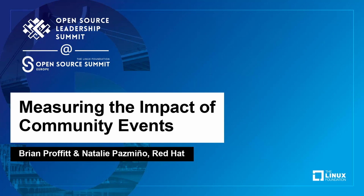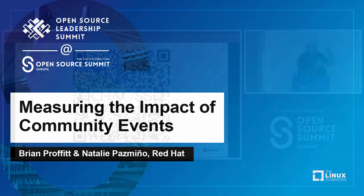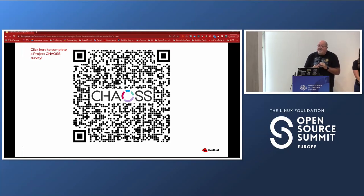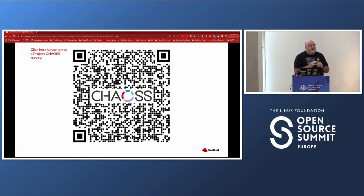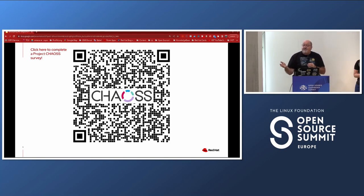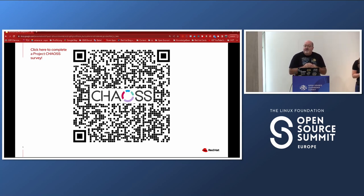Real quick before we get started, welcome everyone. If you would like to scan this QR code, this leads to a survey being conducted by Project Chaos, a Linux Foundation project working with community metrics. The survey author is Dr. Dawn Foster in the back of the room. It's a really important survey and we're encouraging everybody to get in there and provide your thoughts, so we appreciate it.